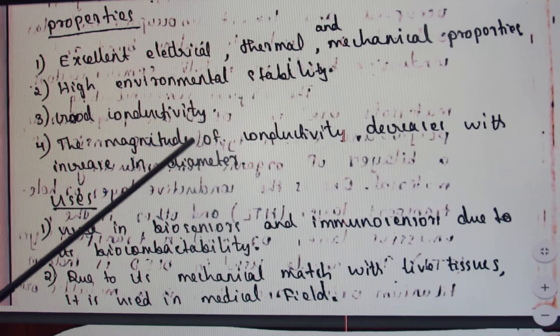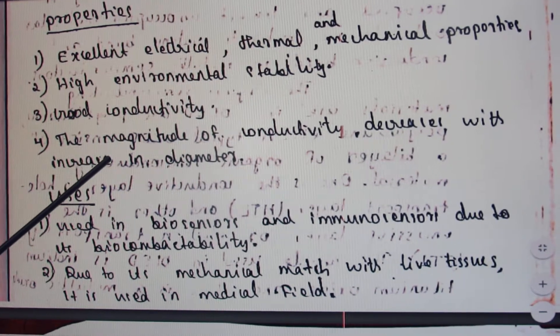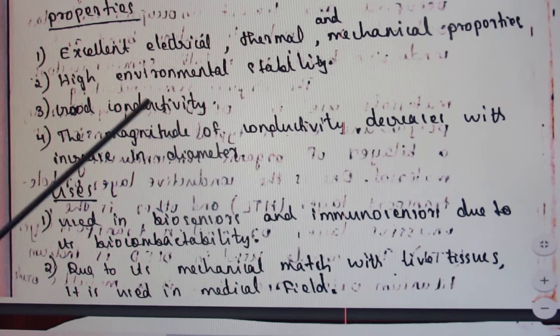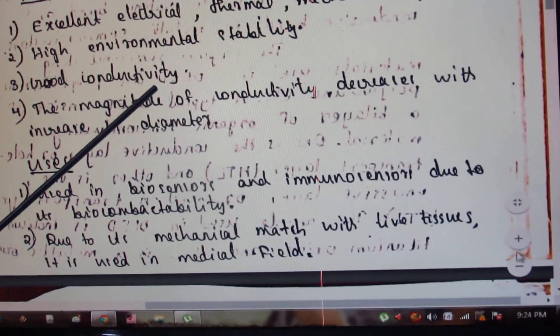It is a good conductor. The magnitude of conductivity decreases with increase in diameter. These are important properties of polypyrrole.